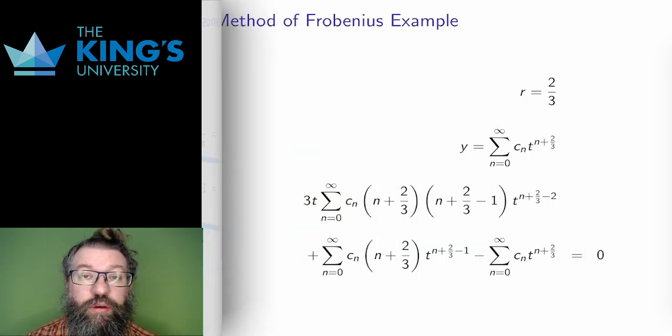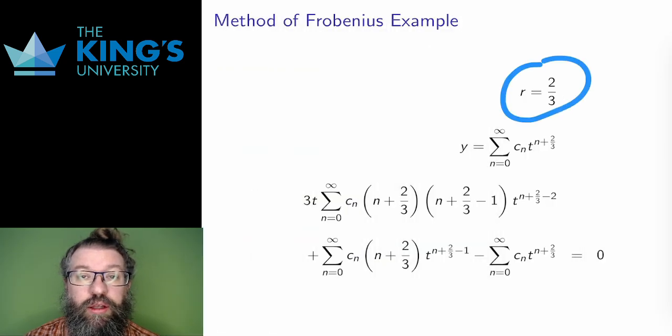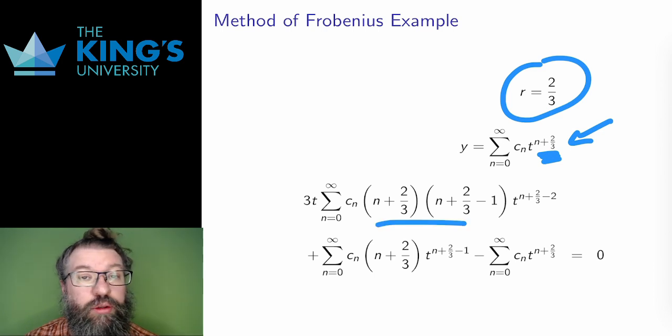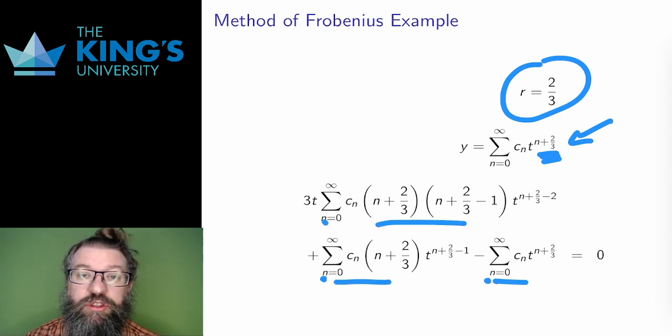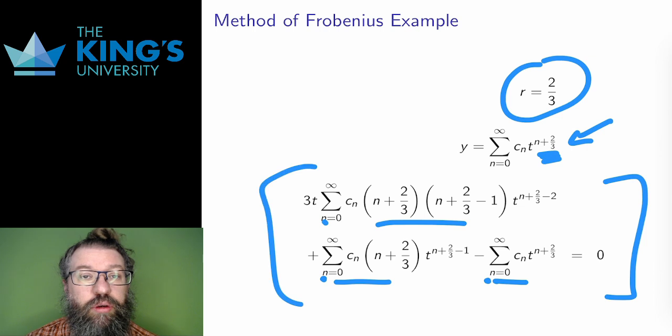Now I do the other solution for the other root, 2/3. This is the series I want to work with, where t to the 2/3 is pulled in and added to the exponent. I put this and its derivatives into the series. I do not lose any terms here. Since the power is not an integer, there are no constant terms to lose to the derivatives.